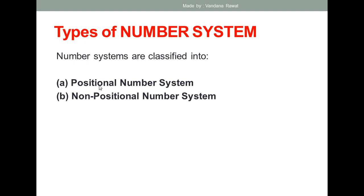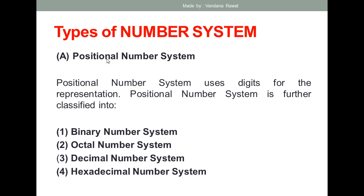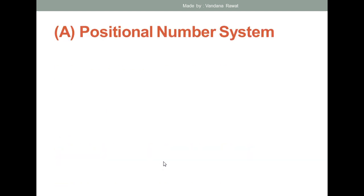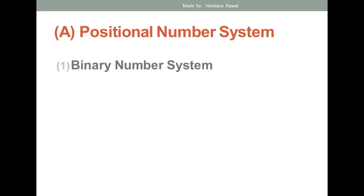Number systems are classified into two types: the positional number system and the non-positional number system. Positional number system uses digits for representation and is further classified into four types: binary, octal, decimal, and hexadecimal number system. In today's session I'll give you the overview, and from the next session I'll show you examples — how to convert these number systems into other types. From the next session I'll solve questions from this number system topic.